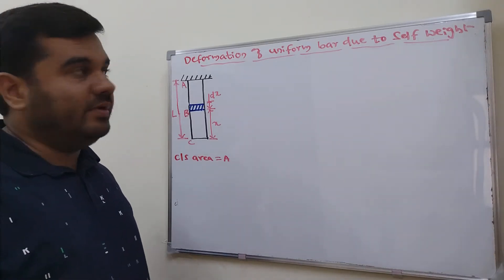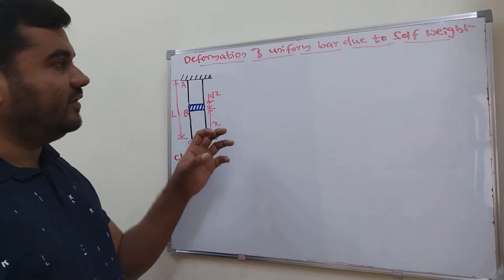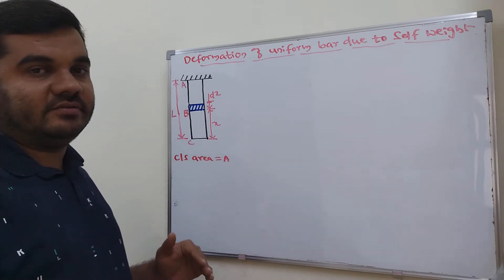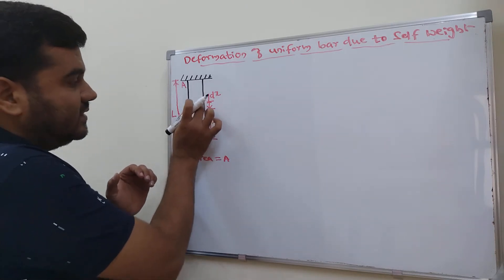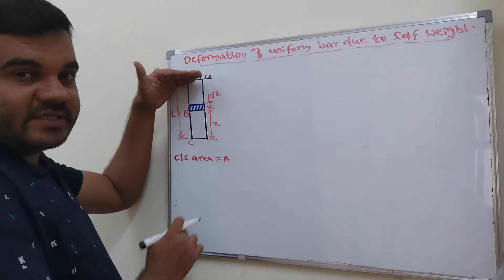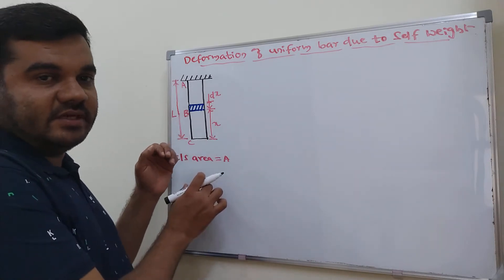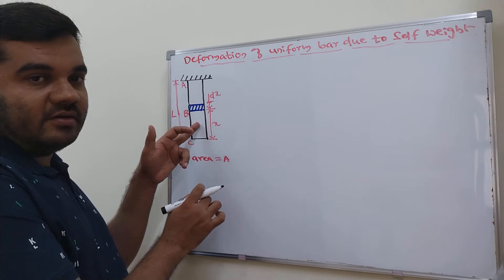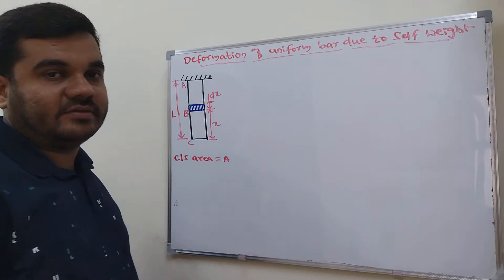In this video we will derive the formula for the deformation of a uniform bar when it is subjected to self-weight. Here a uniform bar of constant cross-section area is considered, with one end fixed and the other end free. Due to the self-weight of this uniform bar, we need to derive the deformation.